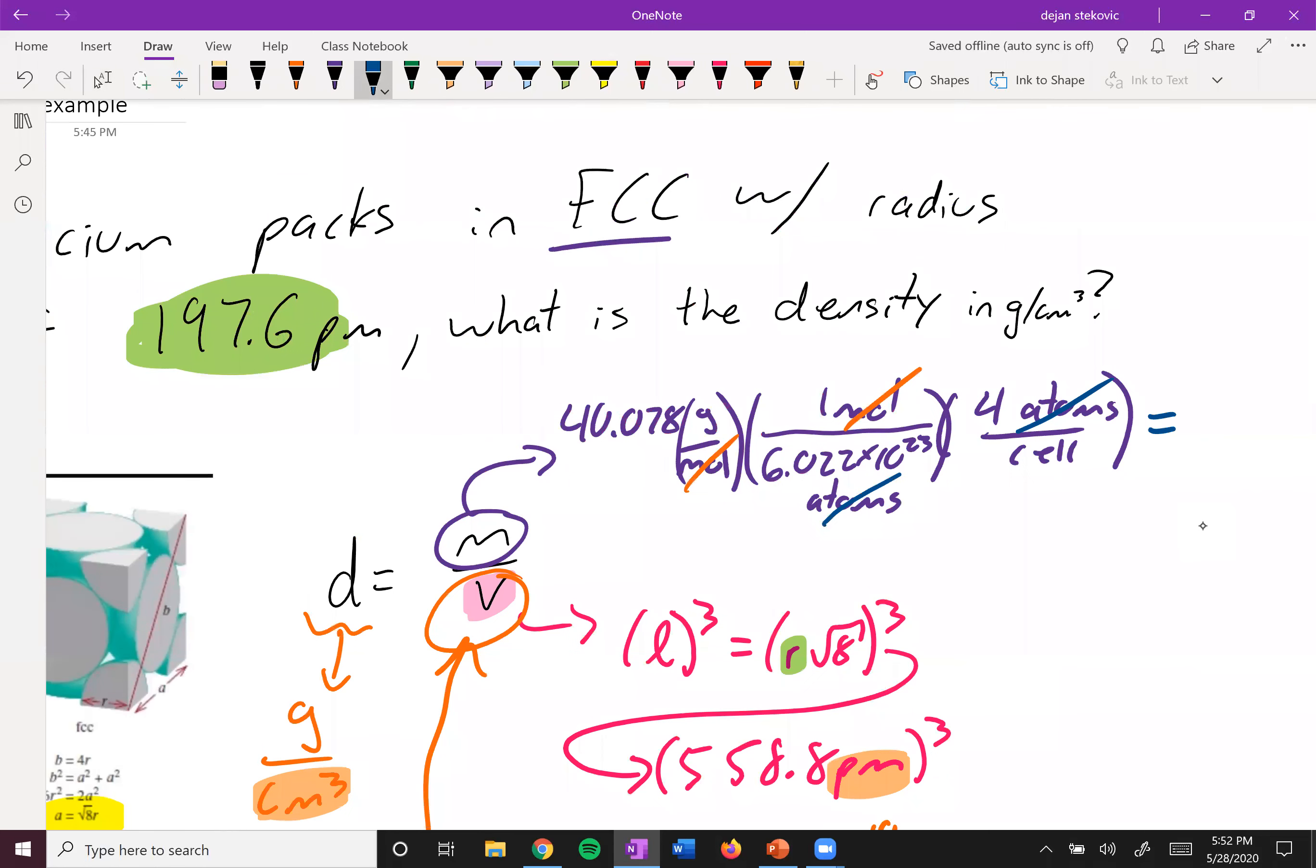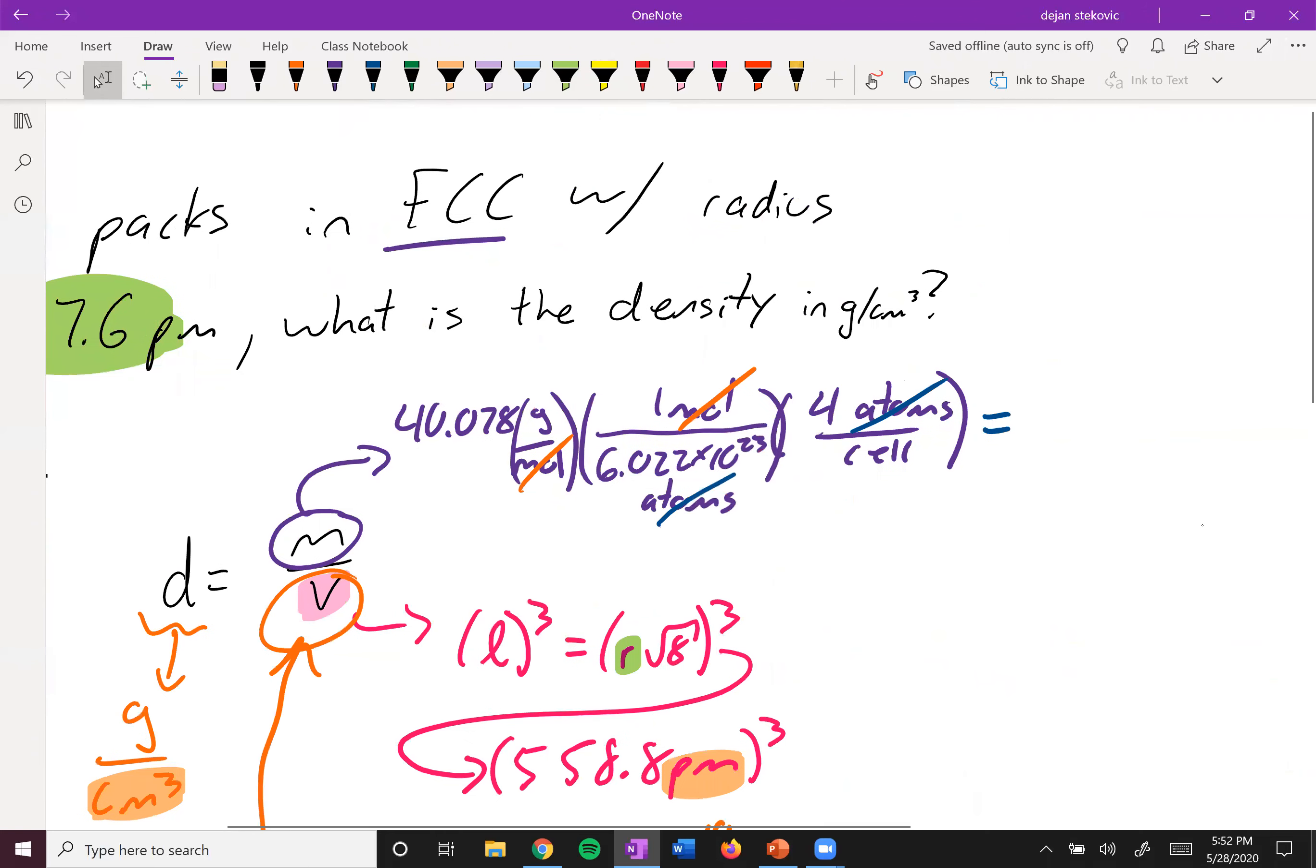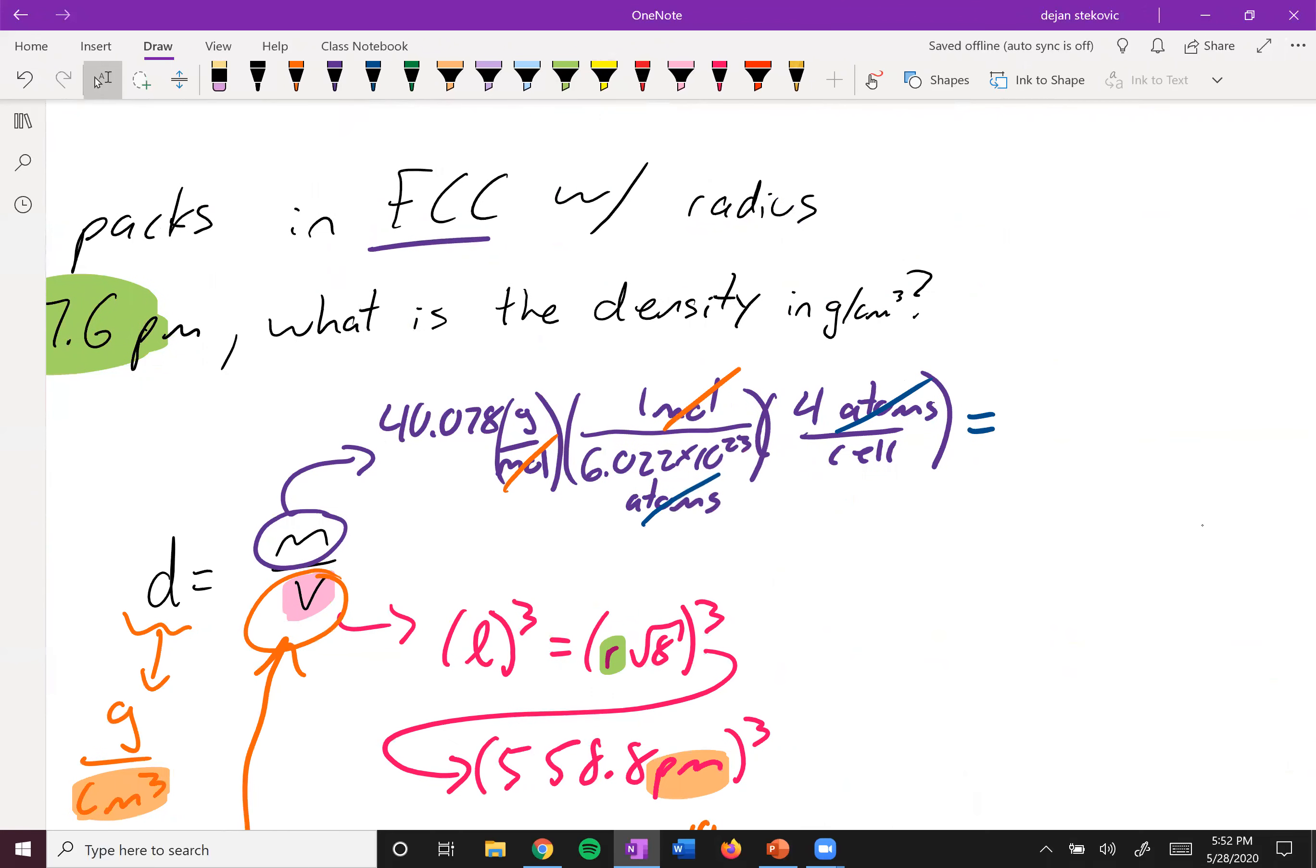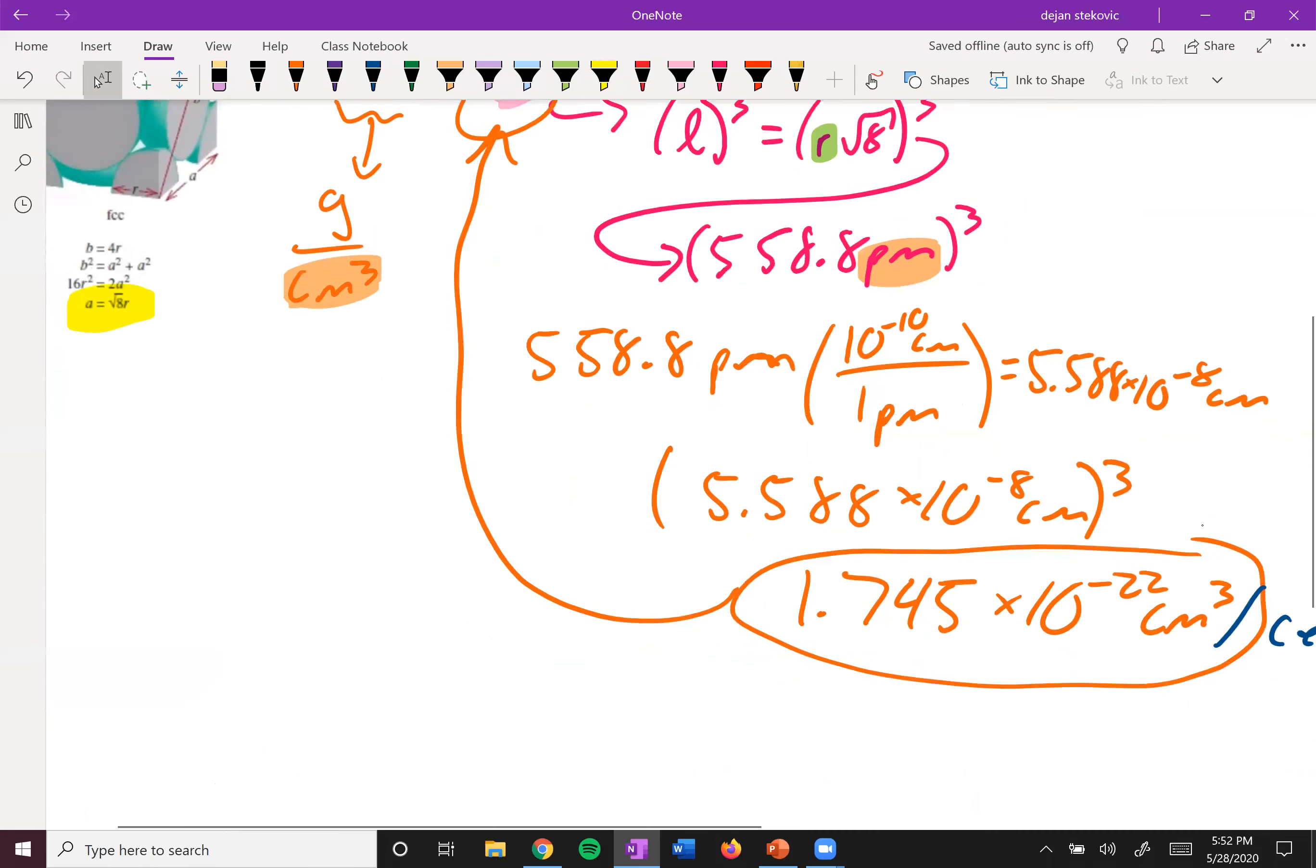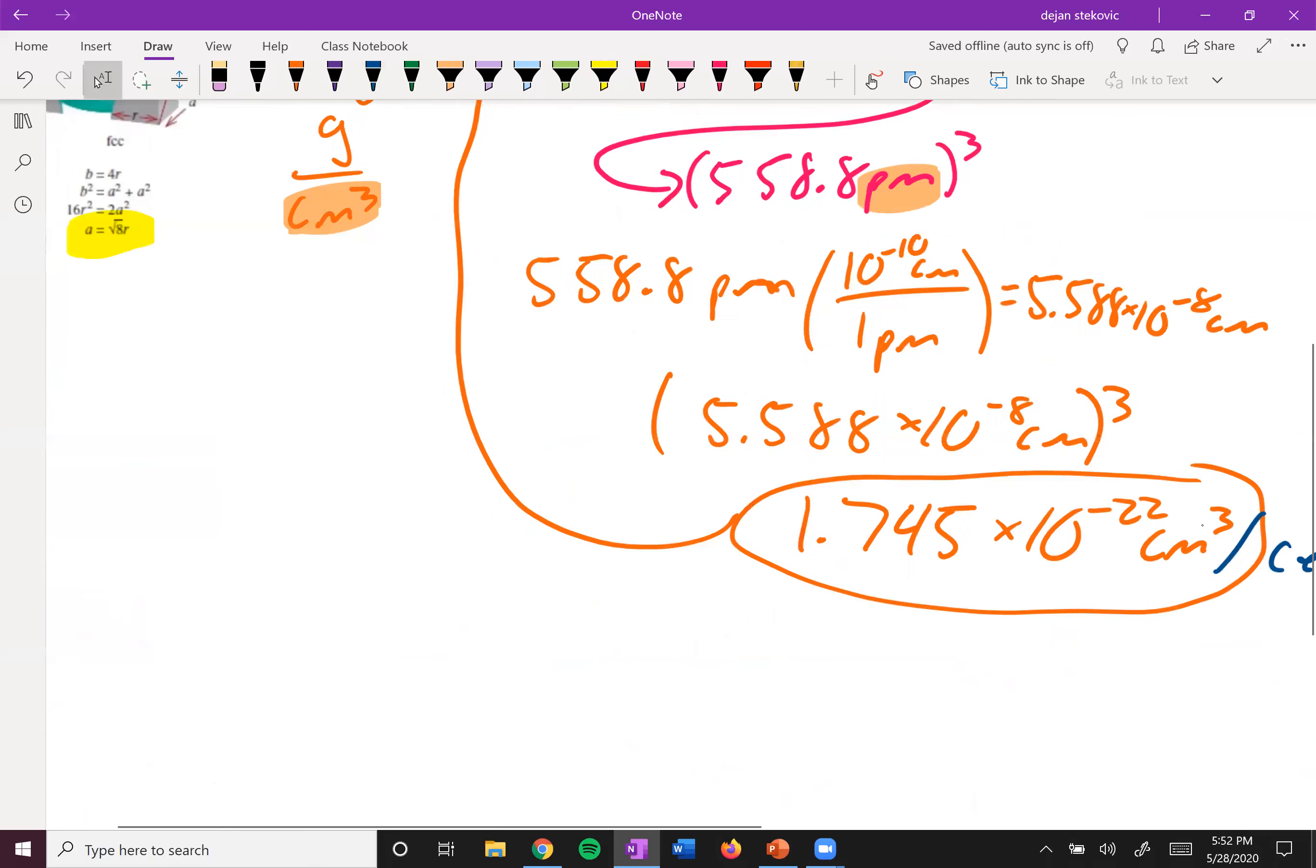So you can take this number, which let's see, numerically is 2.662 times 10 to the negative 22 grams. Take this, plug it back into there,